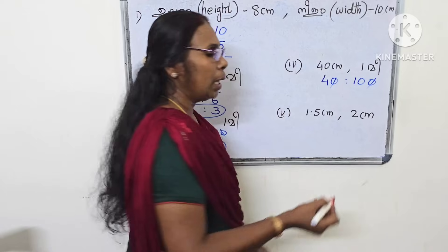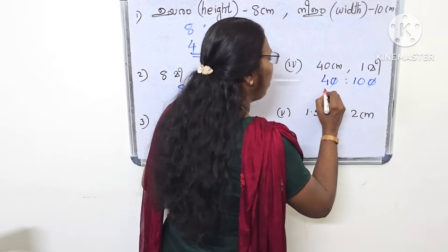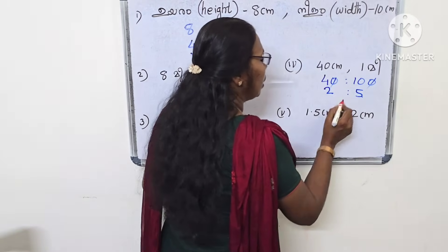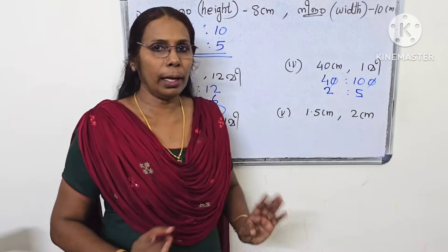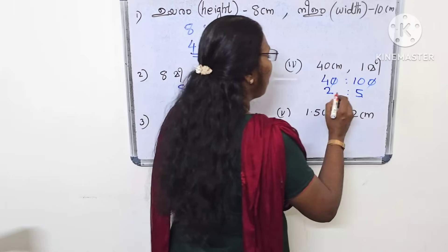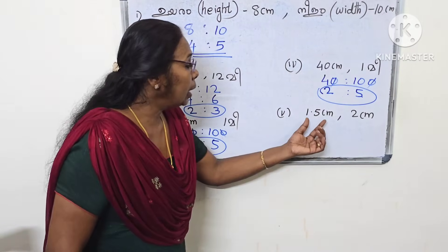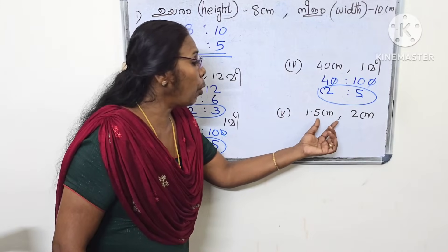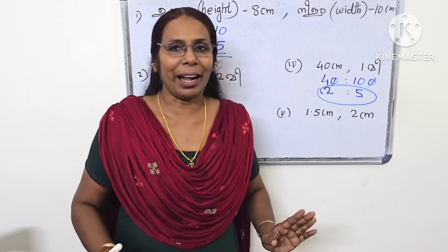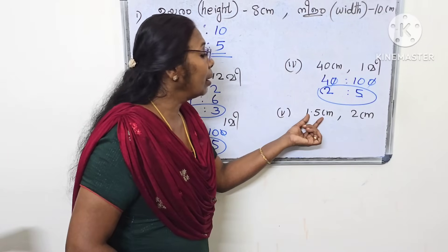Now the answer is 4 is to 5, then 2 is to 5. We work through the problem. The answer here involves 1.5cm and 2cm. There is no further question here — this is the answer.